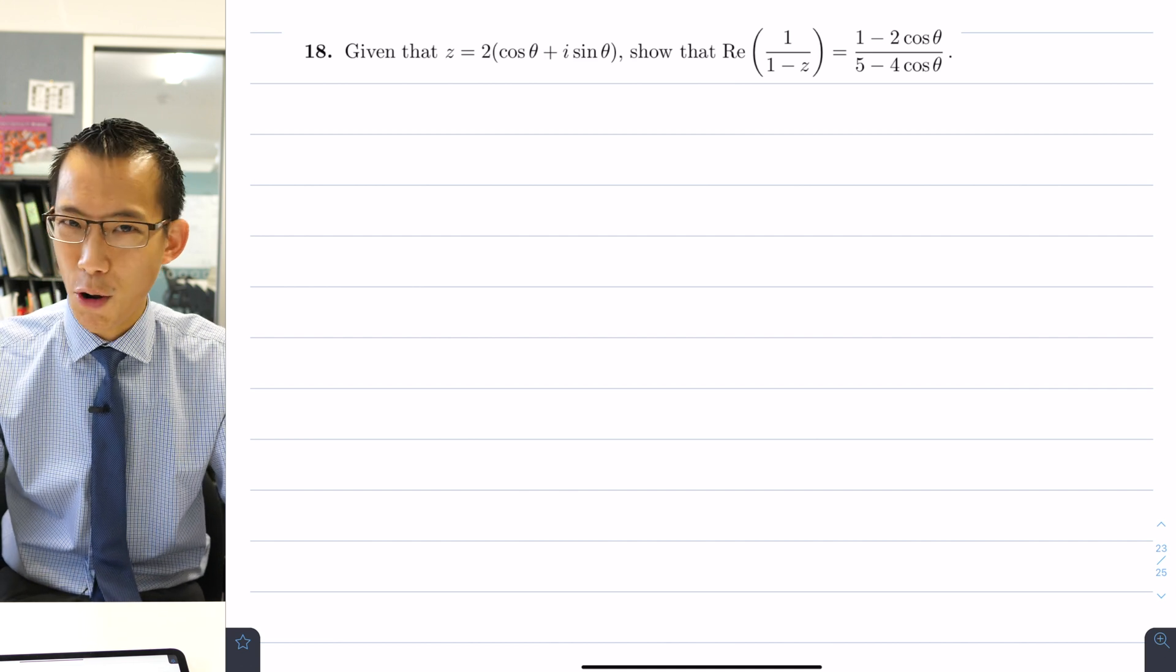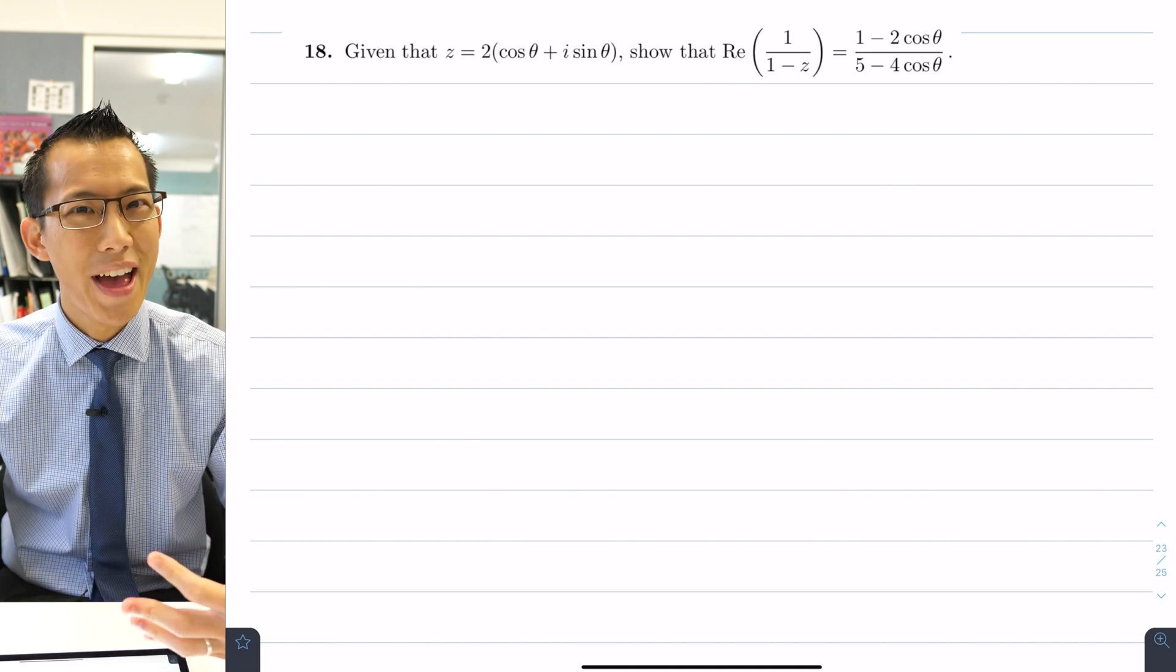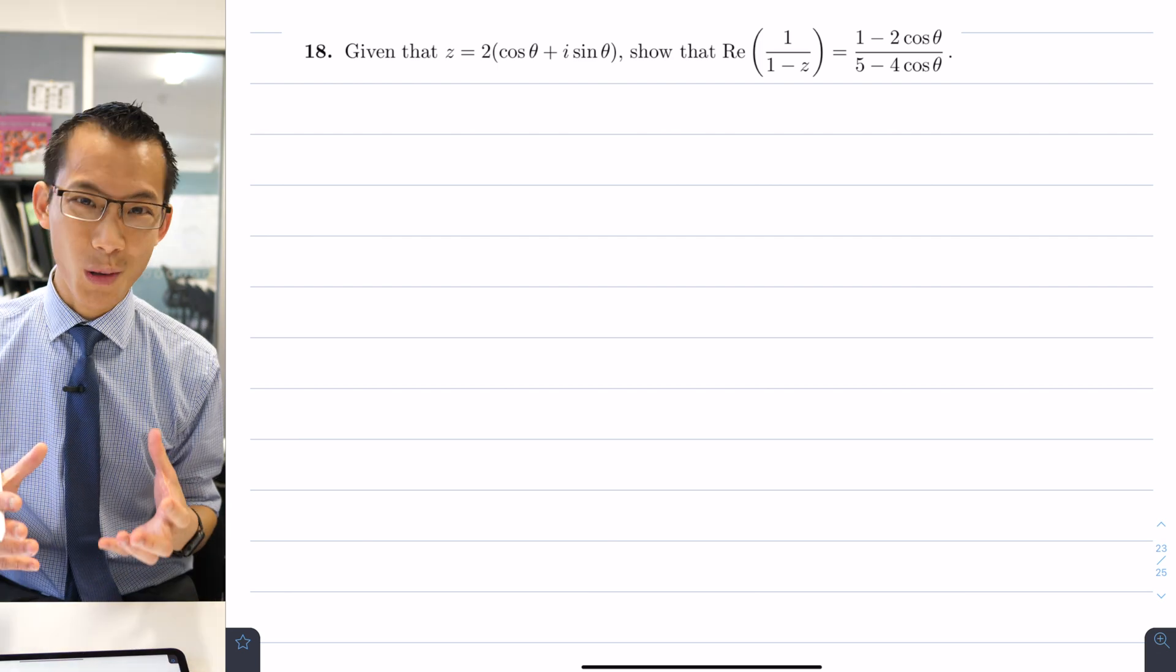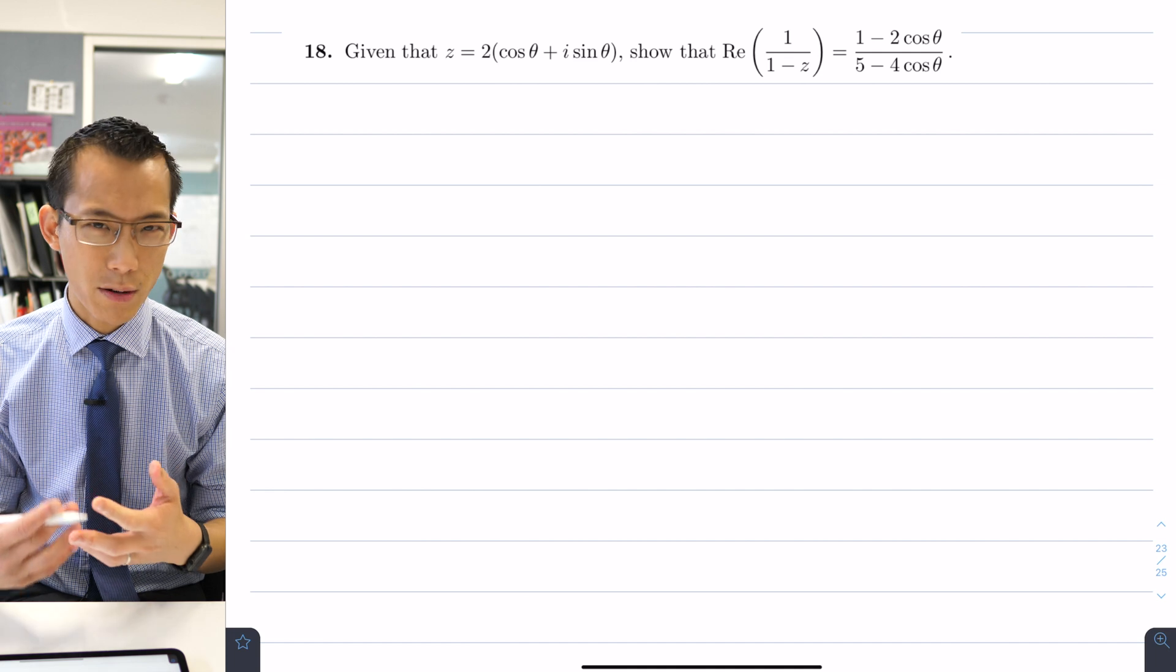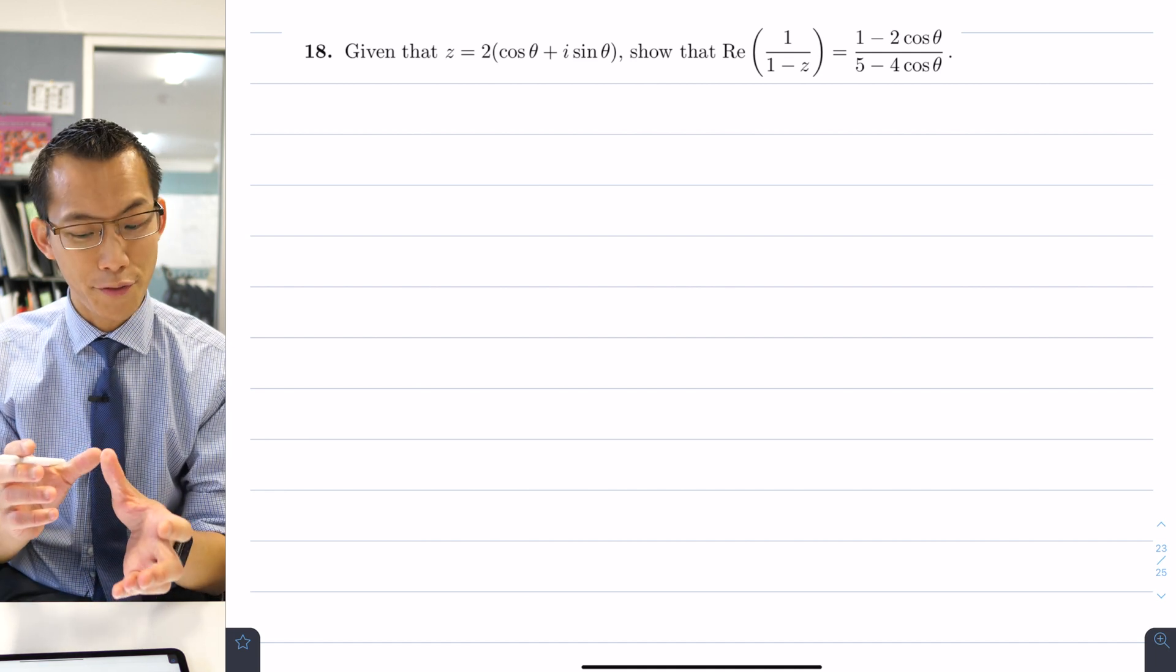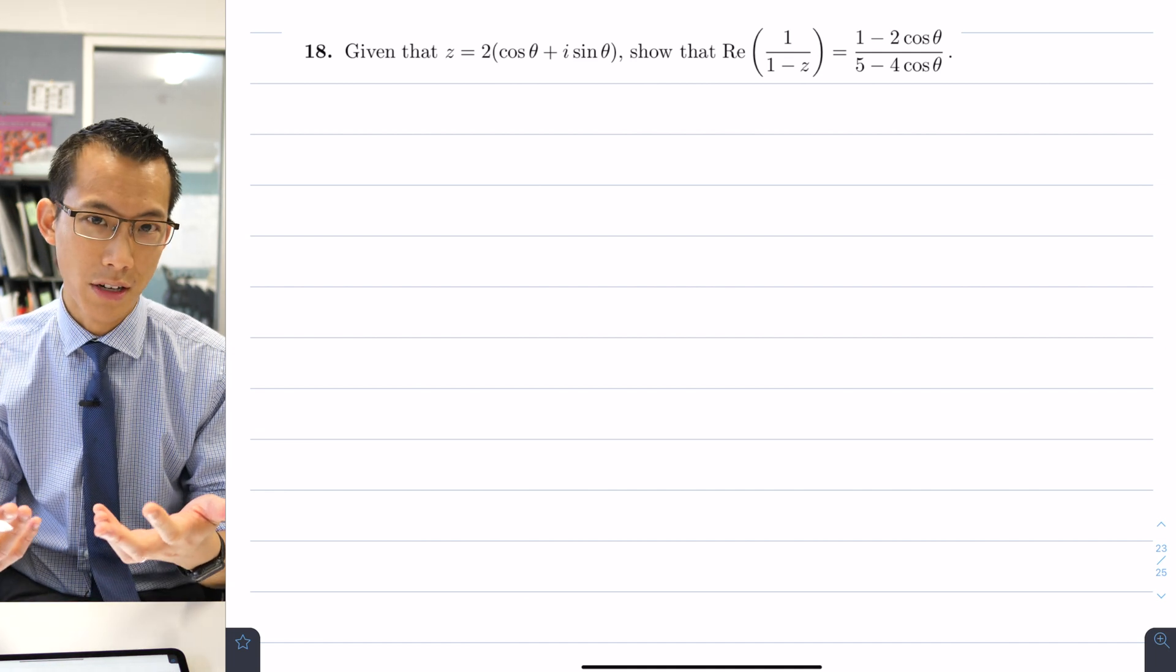This question, as with many in complex numbers and Extension 2 as a whole, looks a whole lot worse than it actually is. So let's read it together, try and unpack what's going on, and then bite it into a few different sized chunks that we can tackle together.